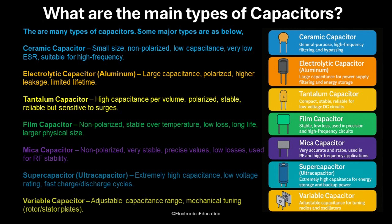Fourth, film capacitors — these are stable over temperature, have long life, but are larger in physical size. Fifth, mica capacitors — these are very stable, of precise values, low loss, and are used for RF stability. Sixth, super capacitors or ultra capacitors — these have extremely high capacitance, but low voltage rating, and have fast charge-discharge cycles. Seventh, variable capacitors — these have adjustable capacitance range and have mechanical tuning.